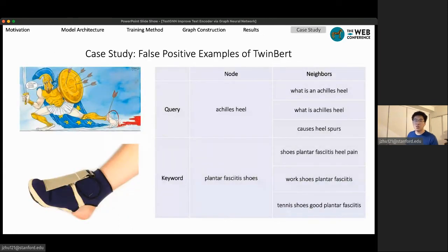So lastly, I would like to show you a few case study examples which demonstrate some intuition why GNN could help. Those are examples where our baseline TwinBERT model fails, but the TextGNN model gets it correct.